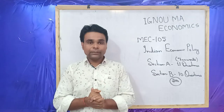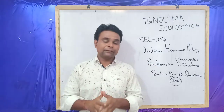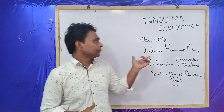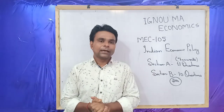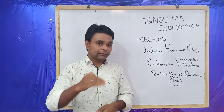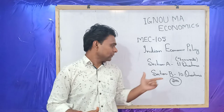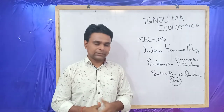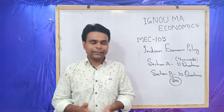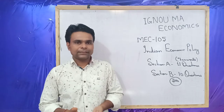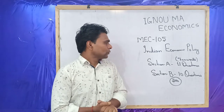If you have a question from Section A, you will write your answer in 700 words, and Section B will be 300 words. You know that Section A carries 20 marks, whereas Section B carries only 12 marks.